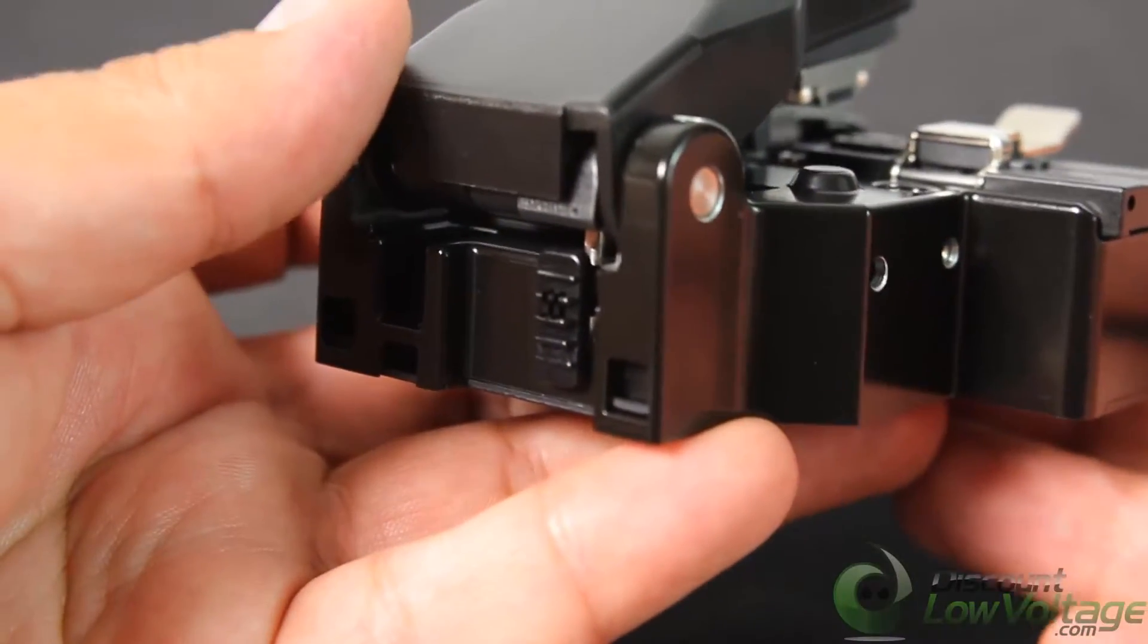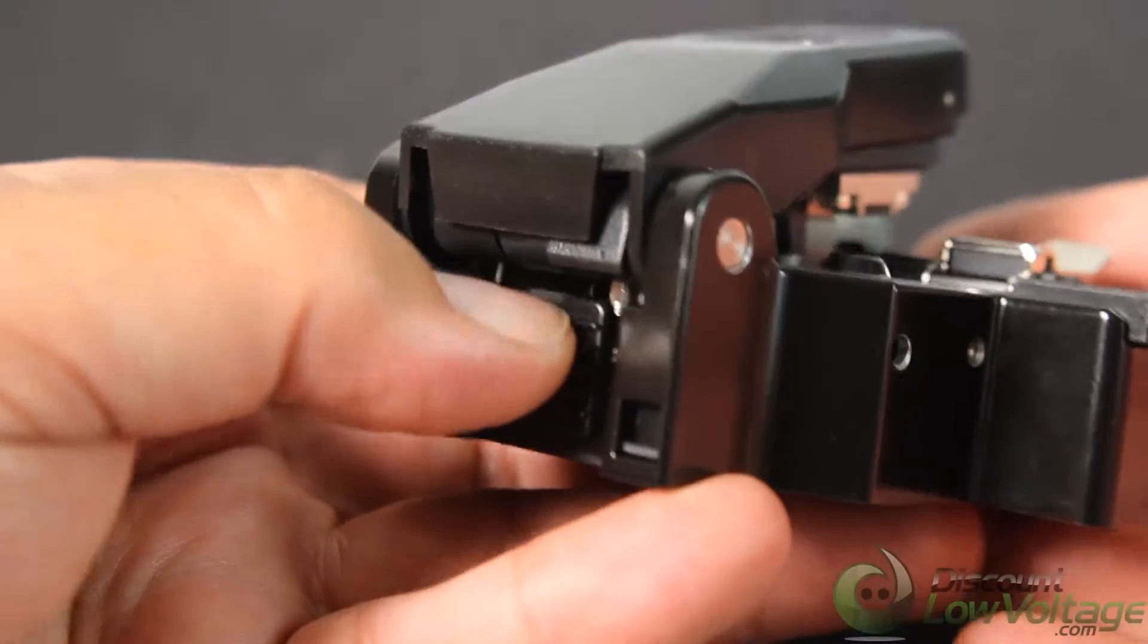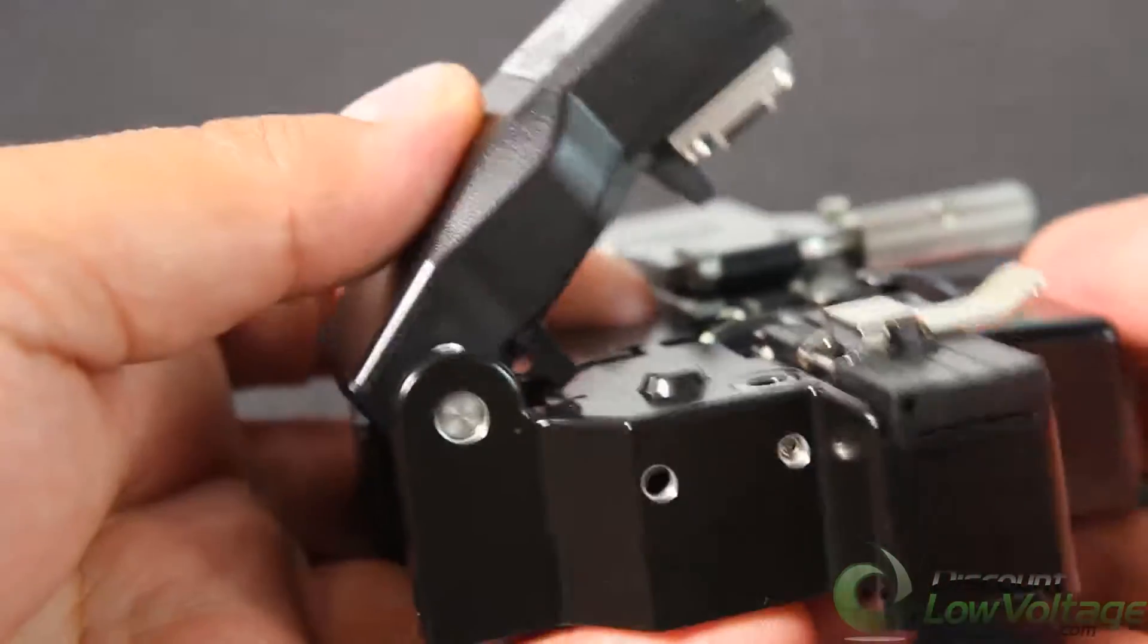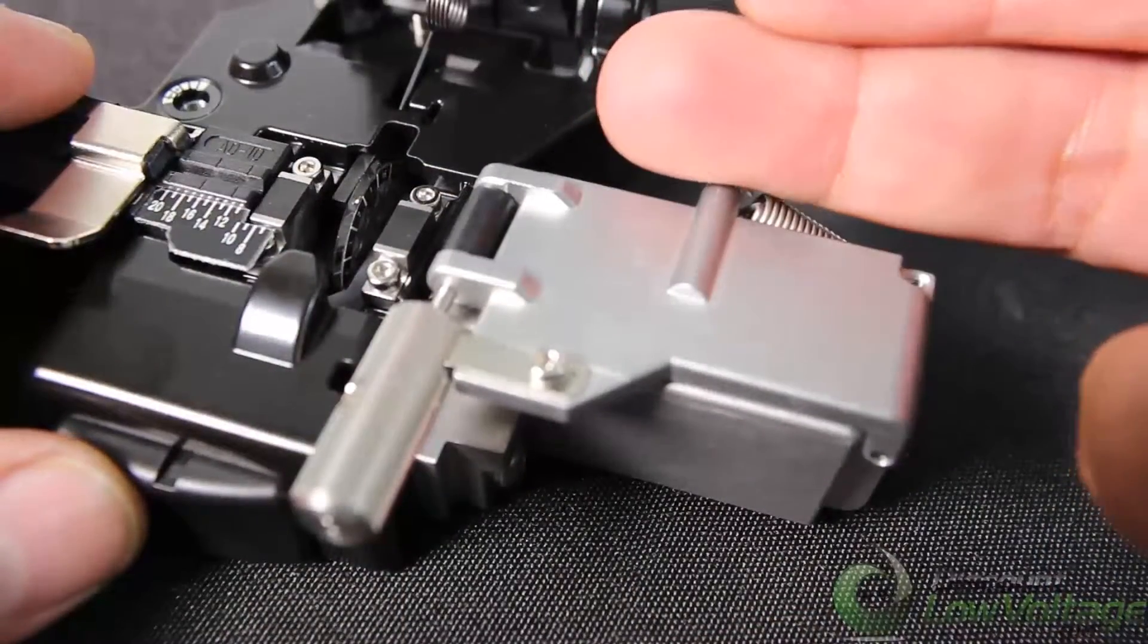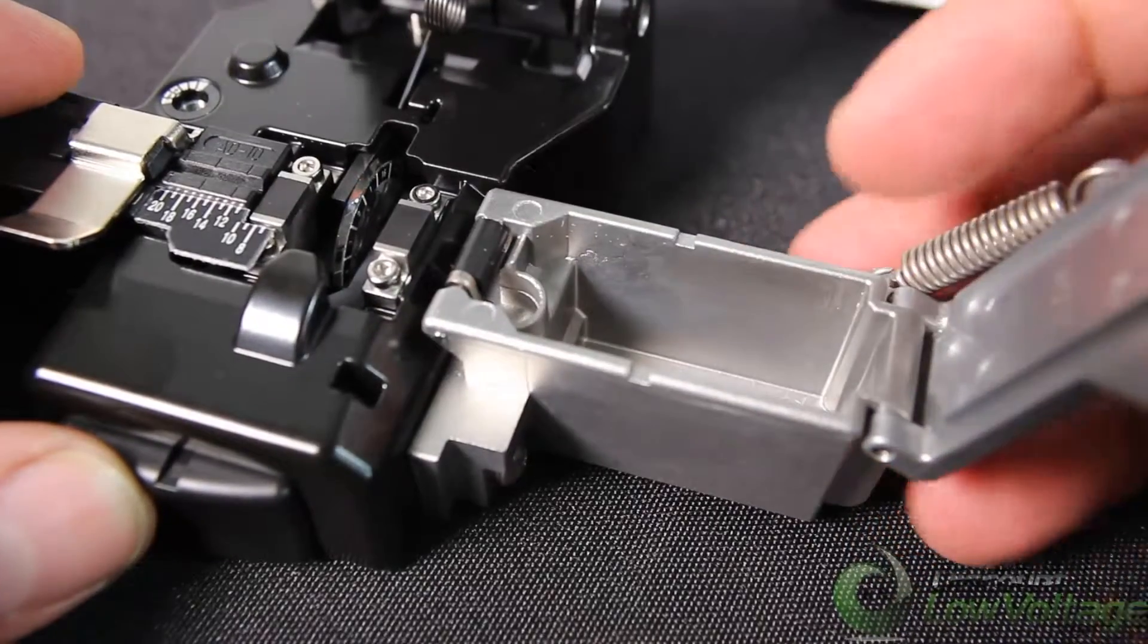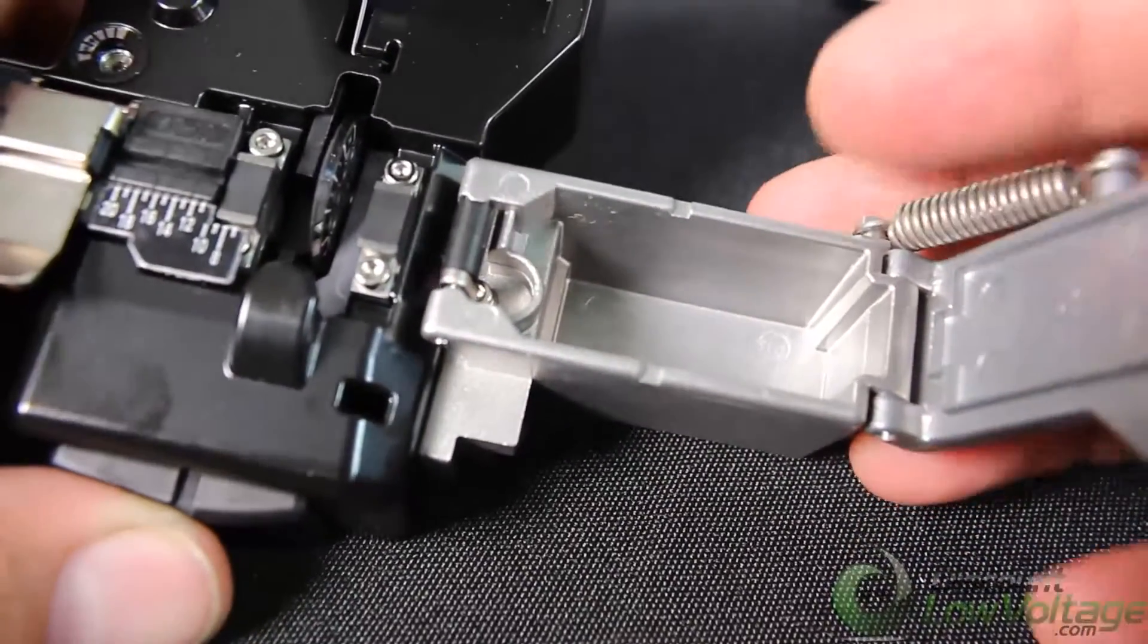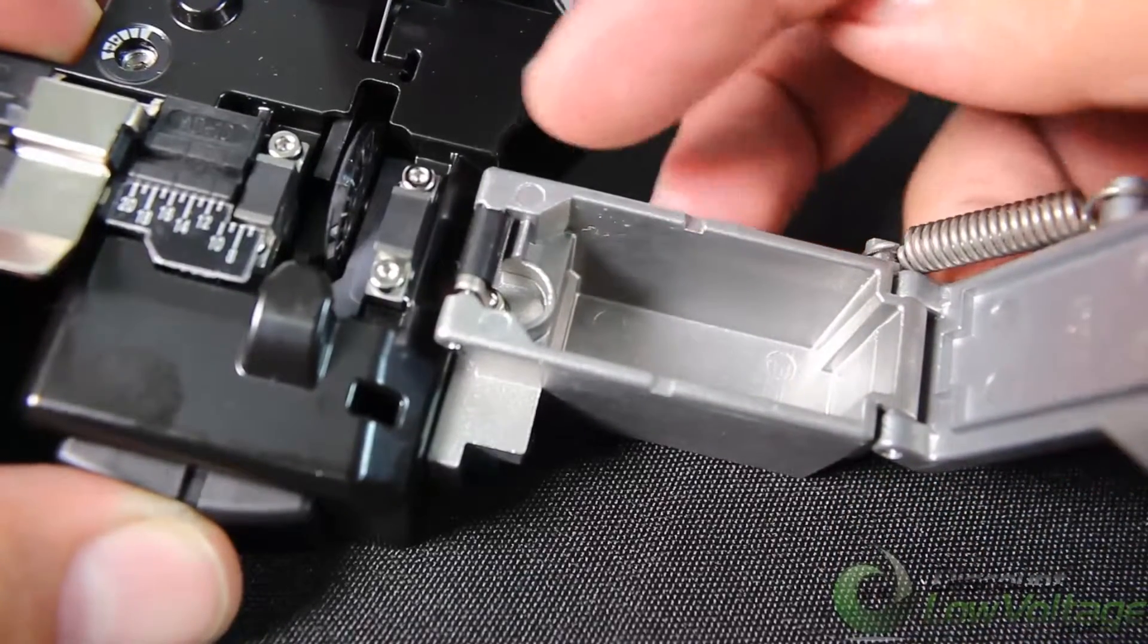On the back of the CT-06 there's the lock there that keeps it down in place. You want to go ahead and unlock that and that'll flip it up. Now the CT-06 does include a fiber scrap collector.